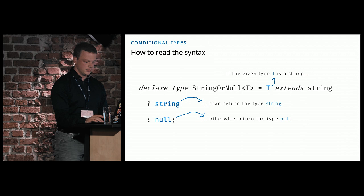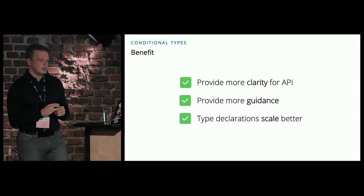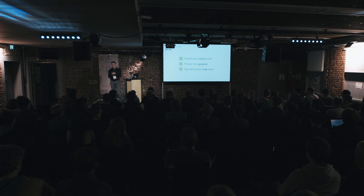The main benefits of conditional types are that you can provide more clarity to your API — you can be very strict about what types you accept and you can build up the reaction of what comes out of your method if you pass certain parameters. This automatically provides more guidance for your developers. And as you have seen before, instead of multiple overloads, I just replaced them by having one conditional type — so your type declarations scale a little bit better because you do not have to maintain them statically.